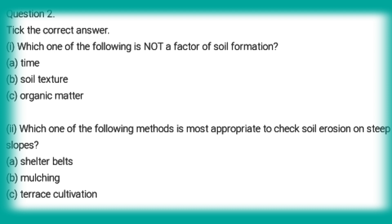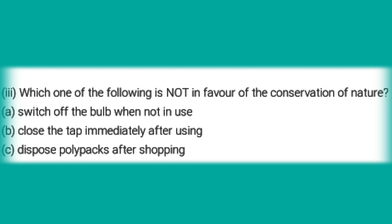Second question — select the correct answer. Which one of the following is not a factor of soil formation: time, soil texture, organic matter? Answer: Soil texture. Which one of the following methods is most appropriate to check soil erosion: steps, shelter belts, mulching, or terrace cultivation? Answer: Terrace cultivation.